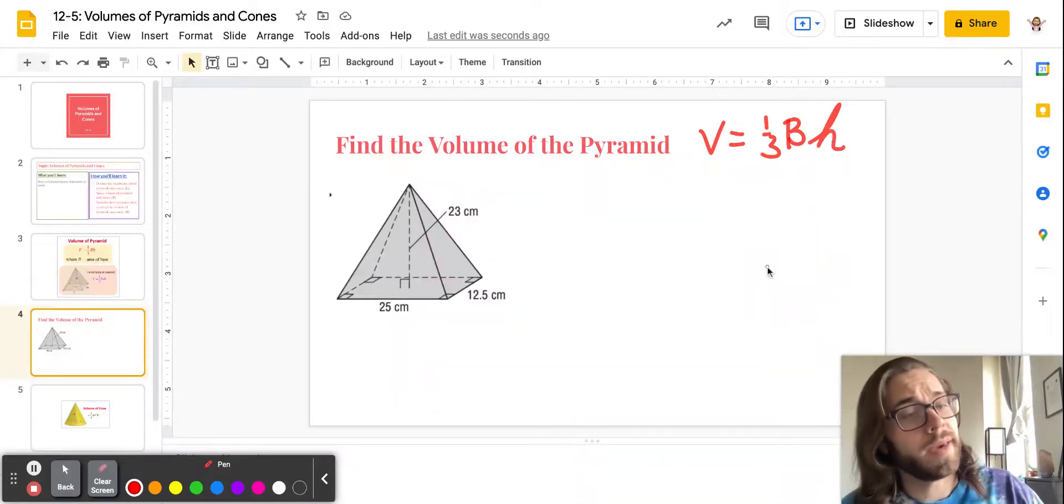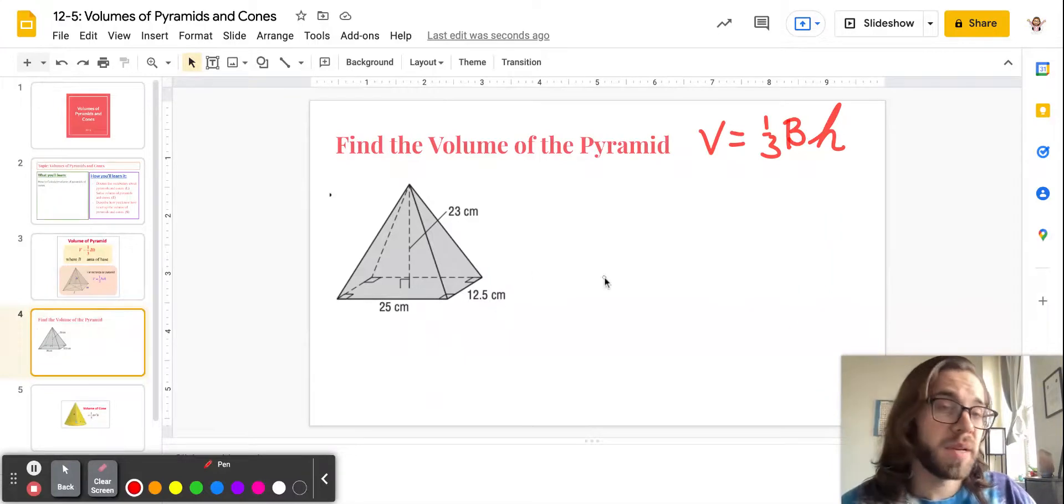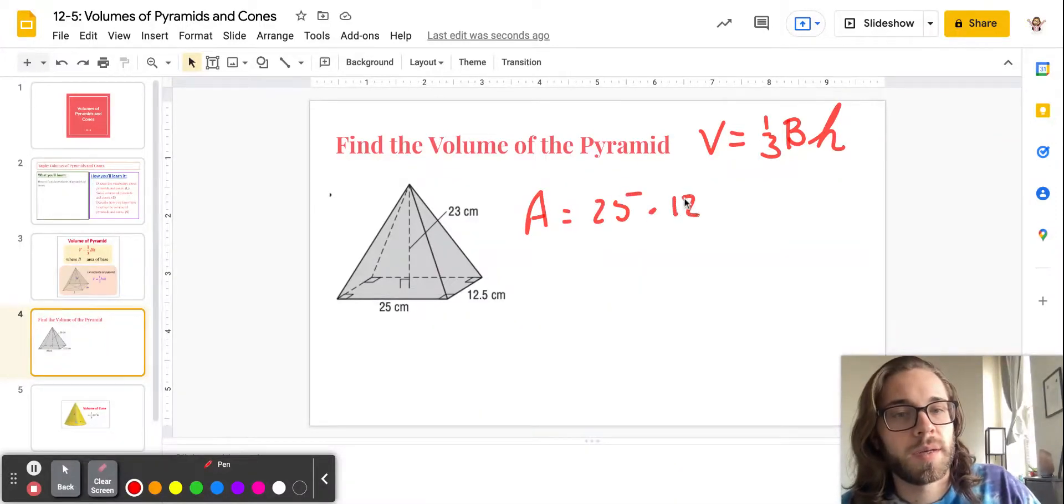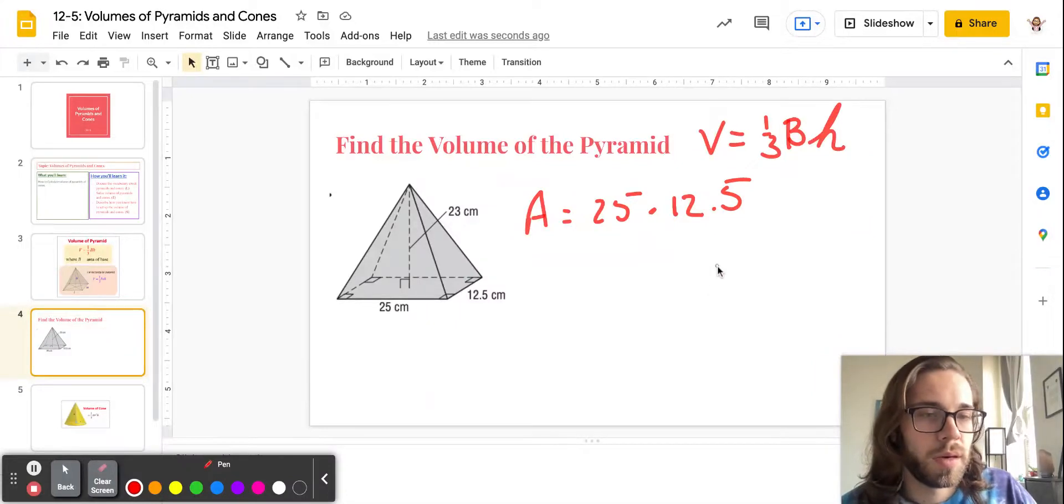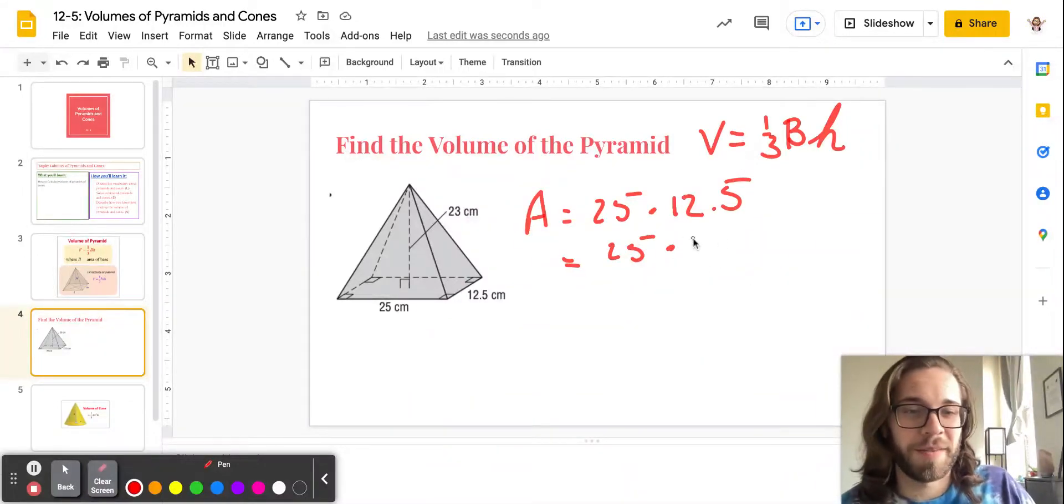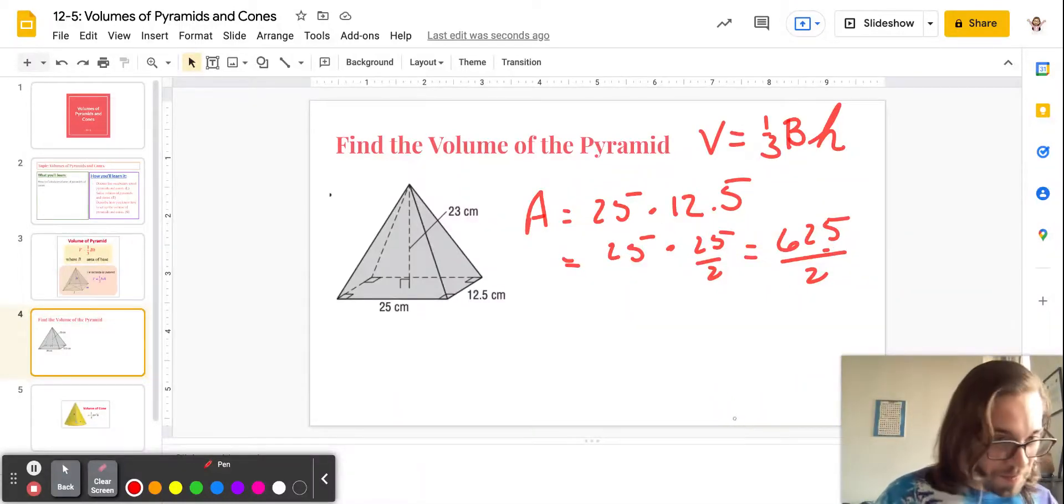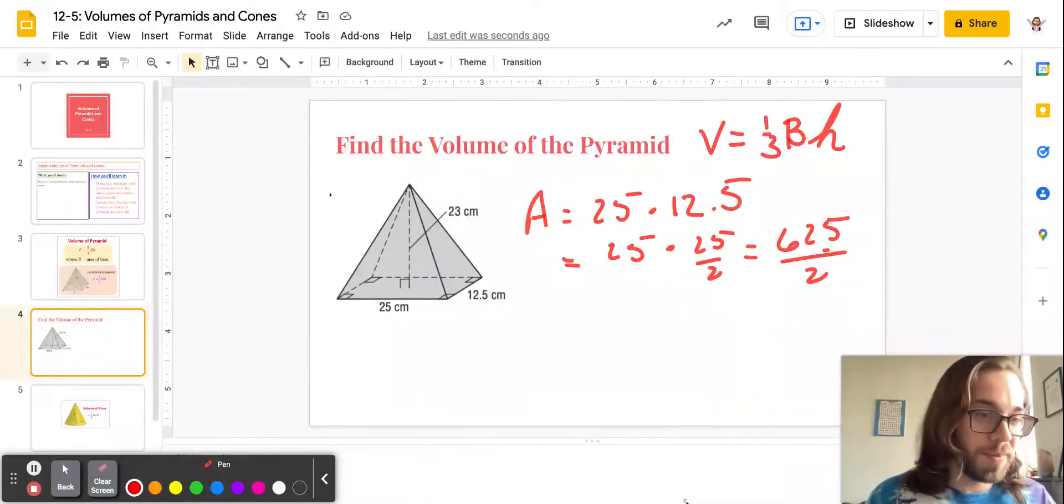Now, we do luckily have the height, and the base is, oh, that's really nice. So area of the base is 25 times 12.5. I don't know what that is off the top of my head, but what do I know about 12.5? Well, that's just 25 over 2, which makes this 625 over 2, which is a much more sustainable and doable process. So this is just kind of things to think about when you're doing these problems. So there's the base.